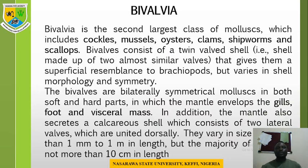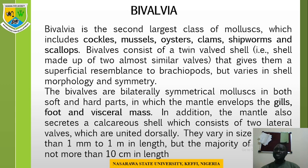Now let's look at the class Bivalvia. Bivalvia is the second largest class of Mollusca, which includes cockles, the mussels, the oysters, the clams, shipworms, and the scallops. Bivalvia consists of a twin-valved shell made up of two almost similar valves, that gives them a superficial resemblance to brachiopods, but varies in shell morphology and symmetry. Bivalvia are bilaterally symmetrical Mollusca, in which the mantle envelopes the gills, foot, and the visceral mass. The mantle also secretes a calcareous shell consisting of two lateral valves which are united dorsally. They vary in size from less than one millimeter to one meter in length, but the majority are not more than 10 centimeters in length.